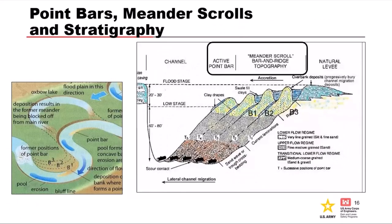Taking a closer look at point bar and meander scroll stratigraphy: a point bar is simply the inside of a meander bend, and a meander scroll is an aggregation or complex of point bars. The meander scrolls and point bars have a unique stratigraphy — coarse material at the bottom grading up to sand. As the river meanders, it leaves behind one point bar after another, accumulating into meander scrolls. They leave behind a characteristic ridge and swale morphology: the ridges are sandier and coarser-grained, while the swales tend to be infilled with fine-grained materials, creating horizontal permeability contrasts that can influence under-seepage.